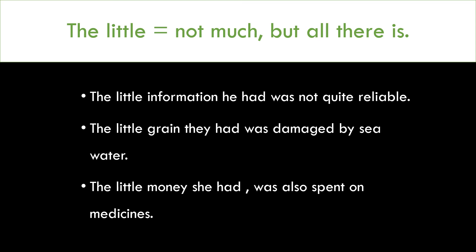The little information he had was not quite reliable. Jitni bhi information thi uske paas was not quite reliable — bharose layak nahin thi. The little grain they had was damaged by seawater. Jo bhi anaj tha unke paas was damaged — kharab ho gaya samundar ke paani se.